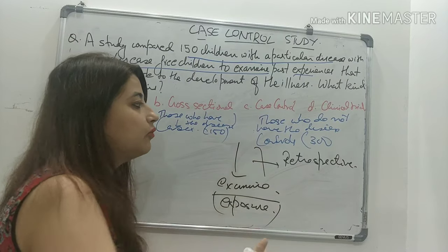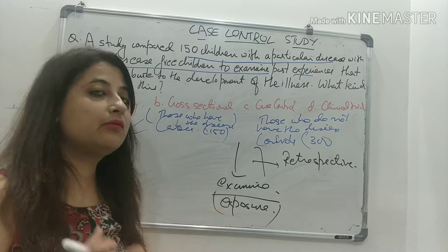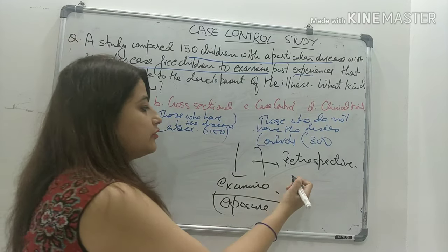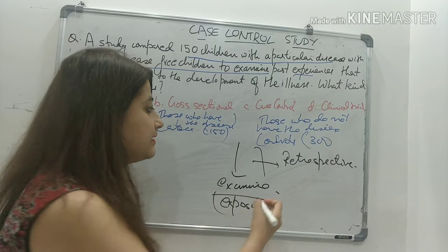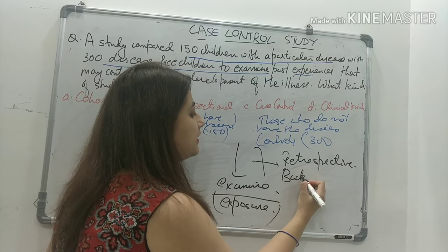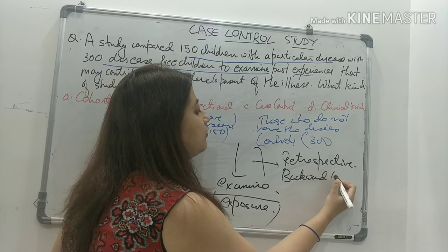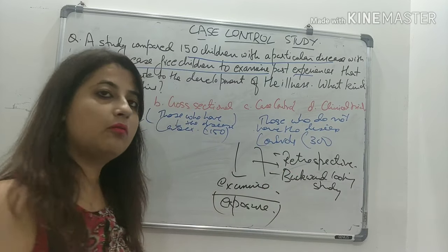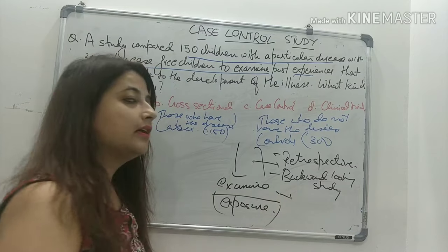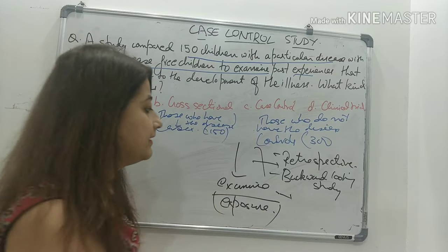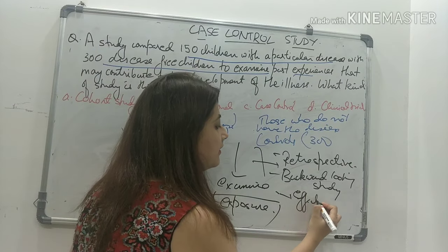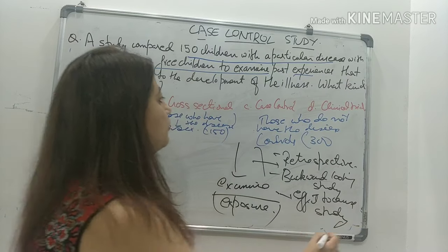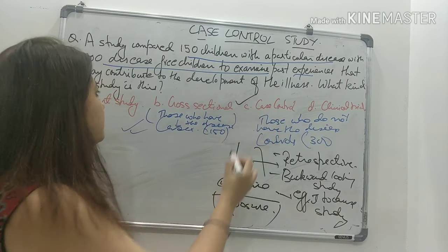In a case control study, you go back in time to see how many were exposed to a particular exposure. So it is a retrospective design - a backward-looking study. A cohort study goes from cause to effect, whereas a case control study goes from effect to cause. So the answer here is case control.